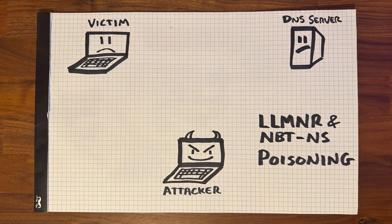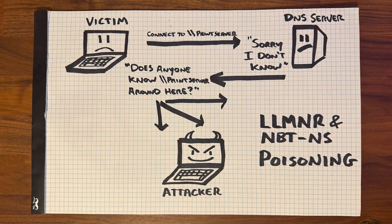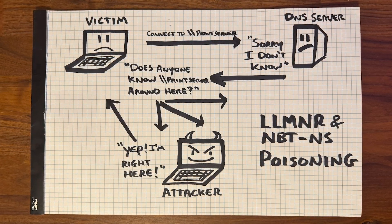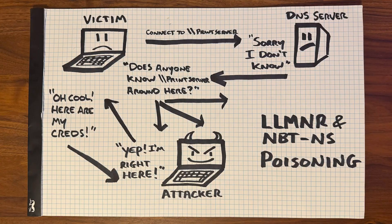Last up we have Link Local Multicast Name Resolution (LLMNR) and NetBIOS Name Service (NBT-NS) poisoning. These two protocols are designed to help resolve host names when DNS fails. The issue is that they're both outdated, typically unnecessary in modern environments, and easily exploitable. Here's how it works: if a user mistypes a server name and tries to access a shared folder, instead of just failing, their machine broadcasts a request asking if anyone on the network knows the name. An attacker running a tool like Responder can intercept that request, pretend to be the correct system, and trick the user into sending their hashed credentials.